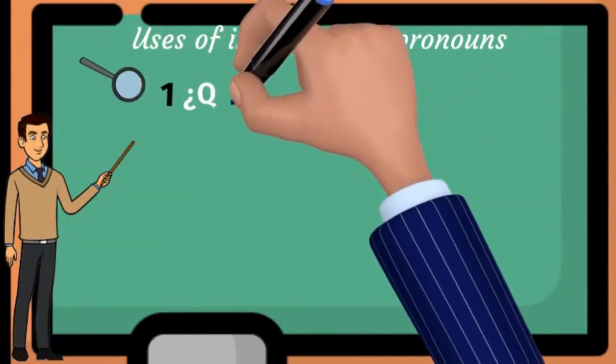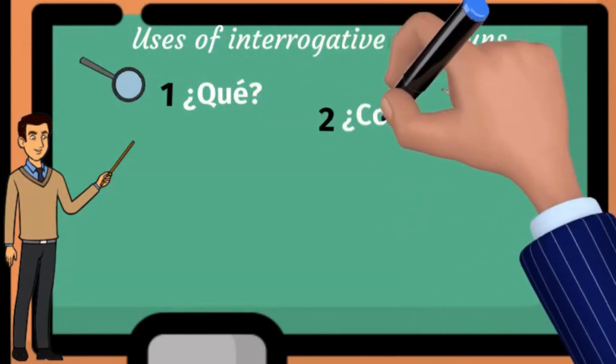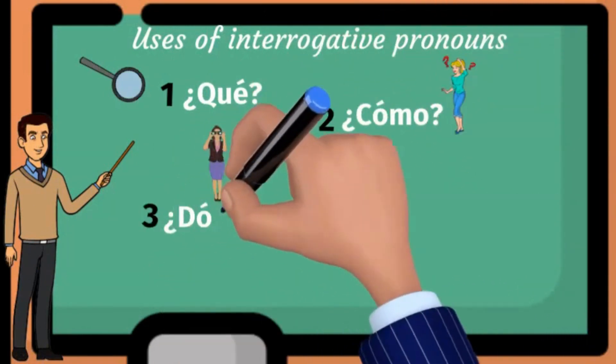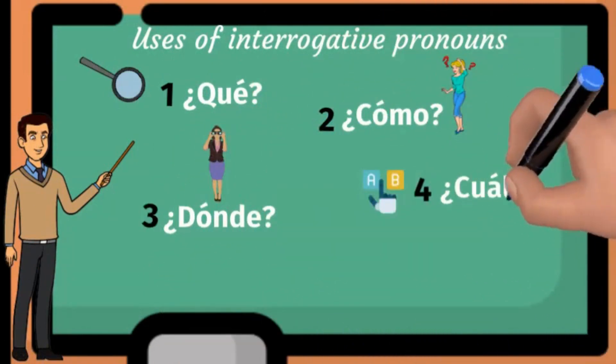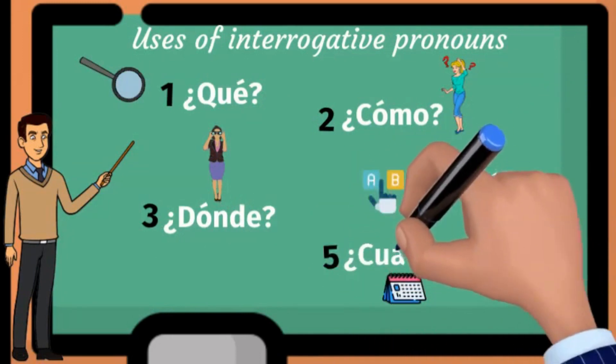We are going to talk about basic questions using only five of the interrogative pronouns: ¿Qué?, ¿Cómo?, ¿Dónde?, ¿Cuál?, and ¿Cuándo?.